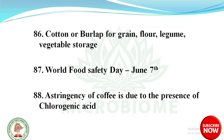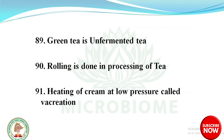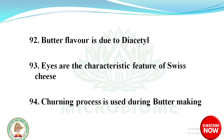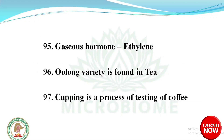Astringency of coffee is due to the presence of chlorogenic acid. Green tea is unfermented tea. Rolling is done in processing of tea. Heating of cream at low pressure is called vacreation. Butter flavor is due to diacetyl. Eyes are the characteristic feature of Swiss cheese. Churning process is used during butter making. Gaseous hormone: ethylene.